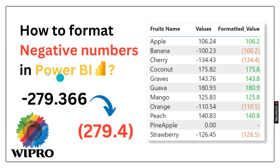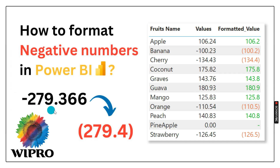As you can see here, the question is: how to format a negative number in Power BI. The interviewer has given this scenario — suppose we have a negative number, for example minus 279.366. Now we want to convert this number into a specific format. If the number is negative, we have to represent this value inside brackets while keeping the value as positive.